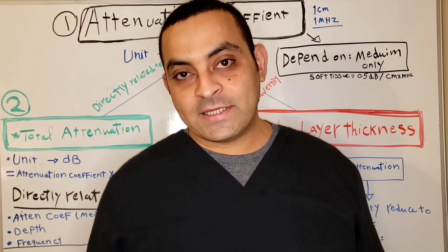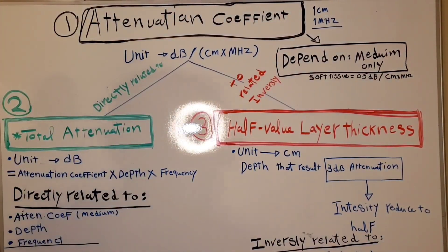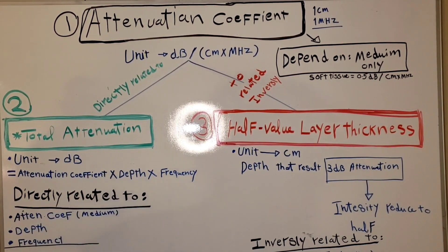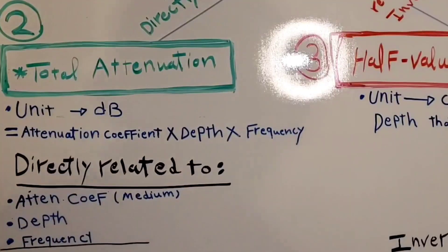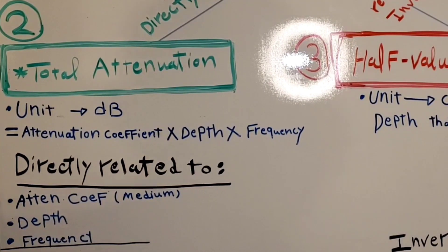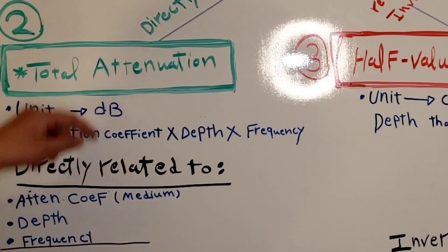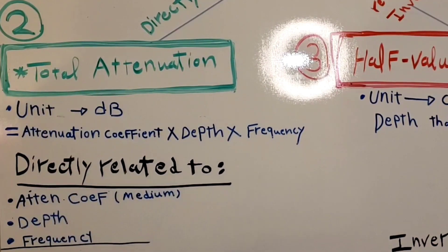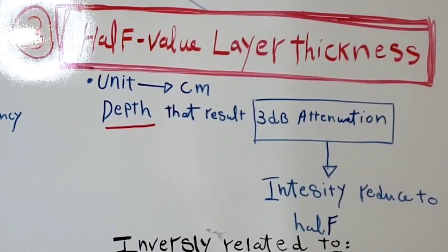The second topic is total attenuation. Total attenuation equals the attenuation coefficient times depth times frequency. The unit for total attenuation is decibels. It depends on the attenuation coefficient, depth, and frequency, and is directly related to all three — when any of them increases, the total attenuation increases.